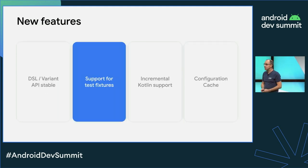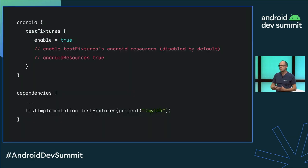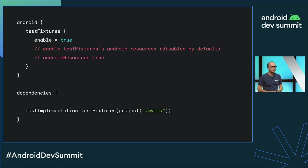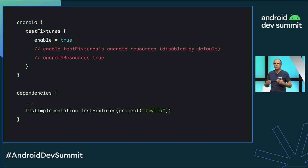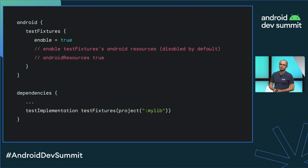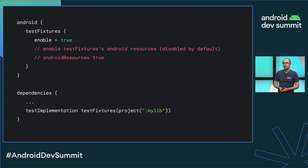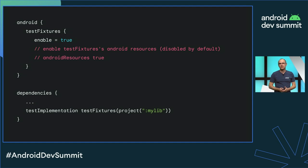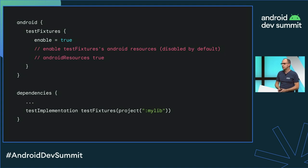Next is support for test fixtures. This was really requested by a lot of our users. If you develop a library and you want your users to have the ability to mock some of your interfaces to test more easily, it's a neat feature developed by Gradle and we added support on the Java side. At 8.0, we are still working on the Kotlin side because it involves the Kotlin Gradle plugin. Now you have the ability to define test fixtures for your libraries and consume them in your test projects.